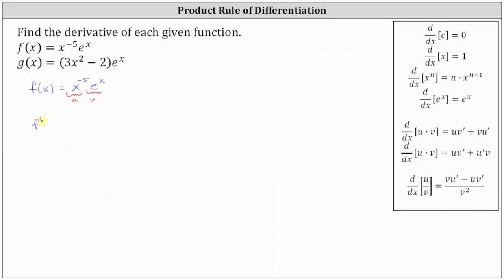This means f prime of x is equal to the first function, or u, which is x to the power of negative 5, times the derivative of the second function, or v prime, which is the derivative with respect to x of e to the x, and then plus the second function, which is v, times the derivative of the first function, or u prime, which is the derivative of x to the power of negative 5.